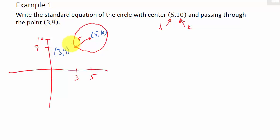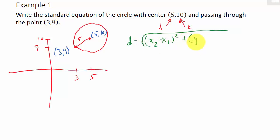All we need to do now is find the distance between these two points. You should have seen the distance formula — just to refresh your memory, the distance between any two points is the square root of (x2 minus x1) squared plus (y2 minus y1) squared. It doesn't matter which points you call x2, y2. We'll call (5, 10) x1, y1 and (3, 9) x2, y2.